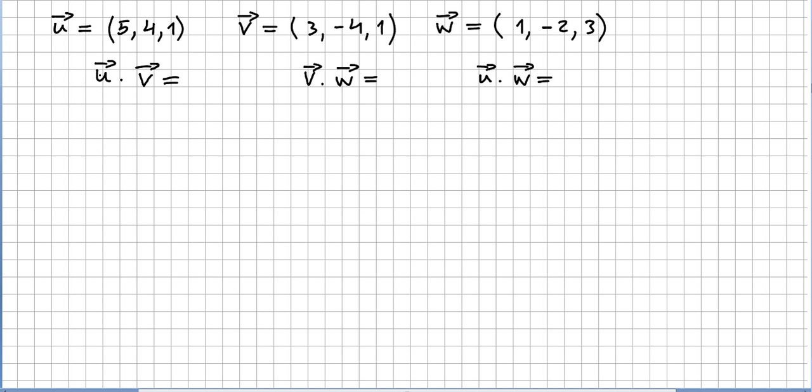You just have to do u inner product with v, and u inner product with w, and v inner product with w, and see which of these vectors are perpendicular. So u times v, we have 15 minus 16 plus 1, this is zero. So u and v, they are orthogonal.